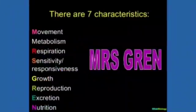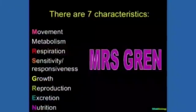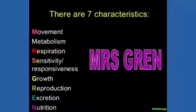As you can see on the slide, there are seven basic characteristics of life, given by the acronym MRS GREEN. They are: movement, metabolism, respiration, sensitivity, growth, reproduction, excretion, and nutrition.